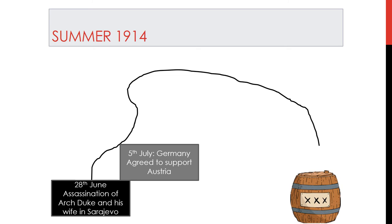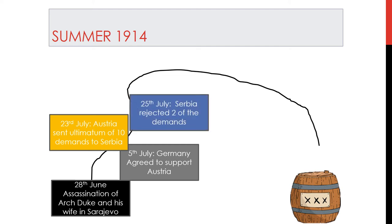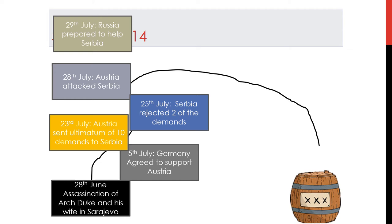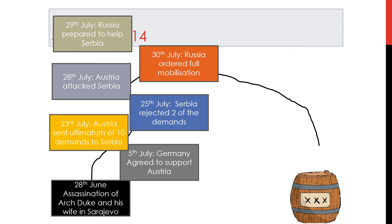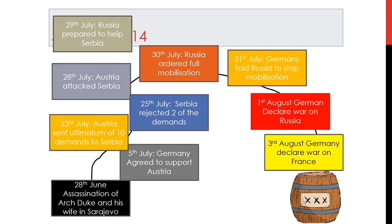On the 5th of July, Germany agreed to support Austria-Hungary in dealing with this assassination. On the 23rd of July, Austria sent an ultimatum of 10 demands to Serbia. On the 25th of July, Serbia rejected two of the demands. On the 28th of July, Austria attacked Serbia. On the 29th of July, Russia prepared its troops to help Serbia - while Germany had already agreed to support Austria. On the 30th of July, Russia ordered full mobilisation of its troops. On the 31st of July, Germany told Russia to stop mobilisation. On the 1st of August, Germany declared war on Russia. On the 3rd of August, Germany declared war on France and World War 1 officially began.